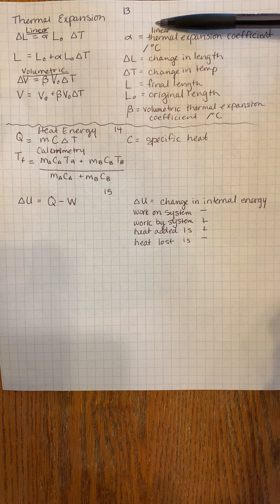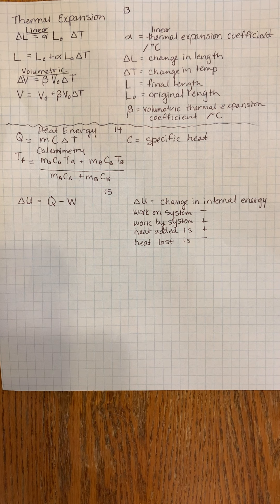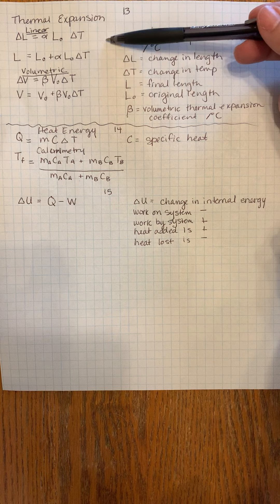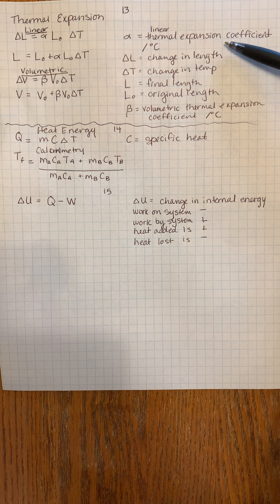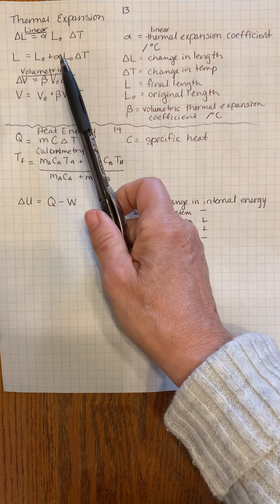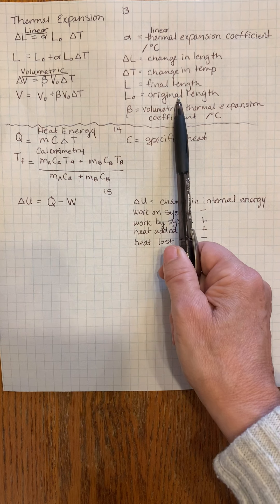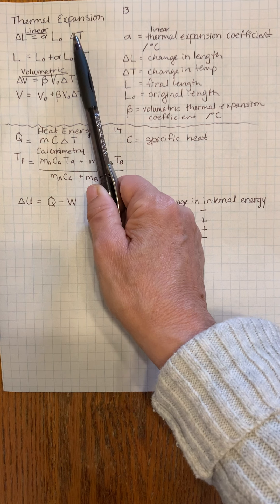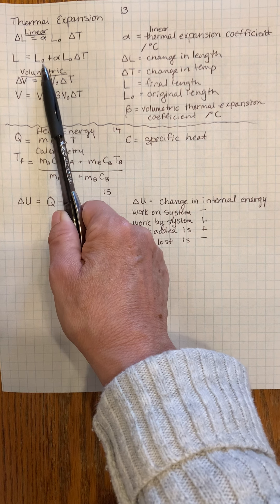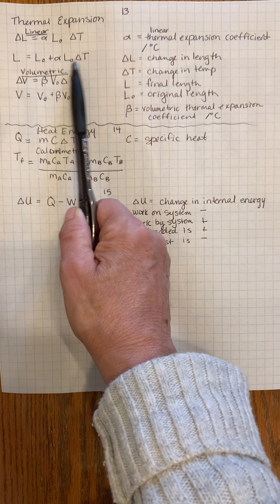From chapter 13 you'll see we have thermal expansion. Materials all have a different rate at which they expand when temperature increases and contract when temperature decreases. Here is a formula for change in length: ΔL equals alpha times L₀ times ΔT, where alpha is the linear thermal expansion coefficient with units per degree Celsius, L₀ is the original length, and ΔT is the change in temperature. The final length is the initial length plus the change in length.